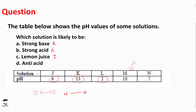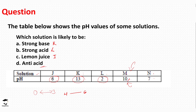Finally, which solution is the antacid? Antacid is a medicine used to treat acidity and is basic in nature. We previously mentioned that magnesium hydroxide is used to make antacid tablets. Since an antacid should be a weak base — we don't want a very strong base that could burn the stomach — the weak base in this table is solution M with a pH of 10.